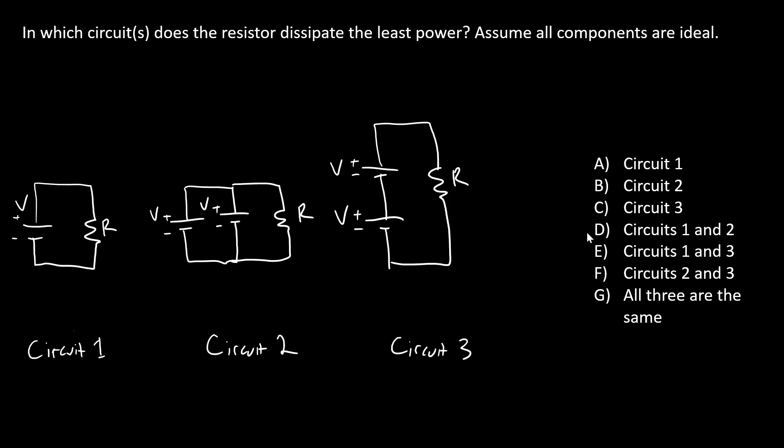So the correct answer is circuits one and two. They both dissipate less power than circuit three. And the power dissipated by the resistor in these two circuits is equal. A lot of students when they see this question will answer circuit one only, but that is wrong.